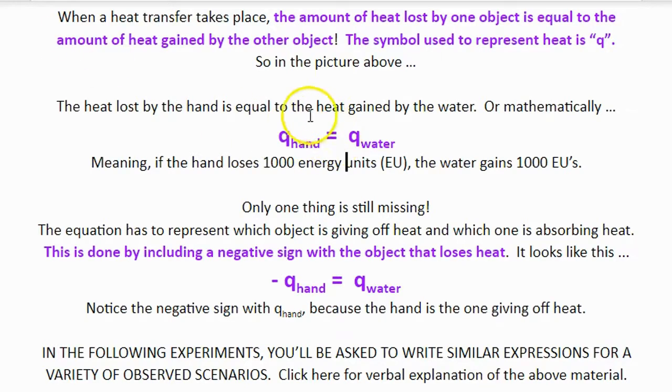If you wanted to represent this mathematically, you could say q sub hand equals q sub water. Meaning, if the hand loses 1,000 energy units, the water is then going to gain 1,000 energy units.